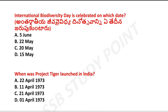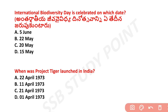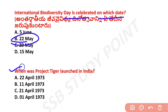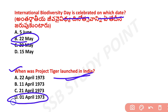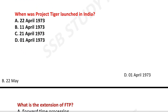International Biodiversity Day is celebrated on May 22nd. Project Tiger is very important — it was launched for the protection of tigers and was established in April 1973.